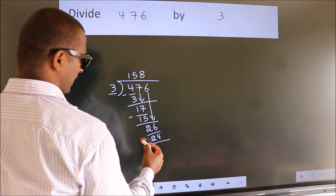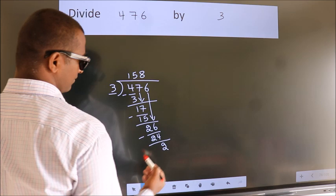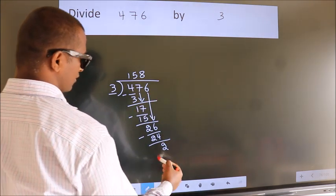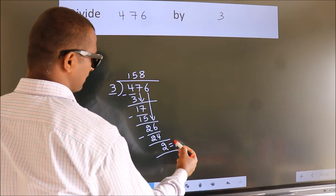Now, we subtract. We get 2. No more numbers to bring it down. So, we stop here. This is our remainder. This is our quotient.